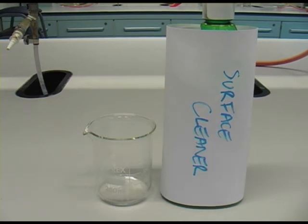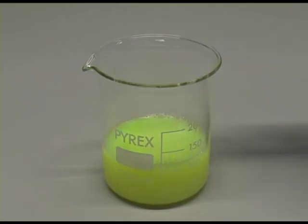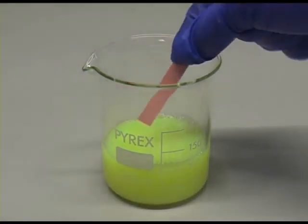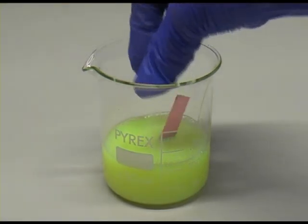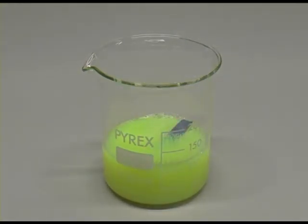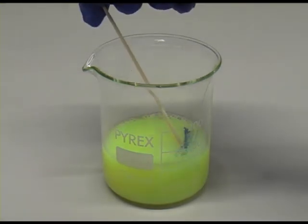What about surface cleaner? Well, let's find out. Here we have some red litmus. Pop it in the surface cleaner. And you can see already that it's gone blue. This means that the surface cleaner is an alkali.